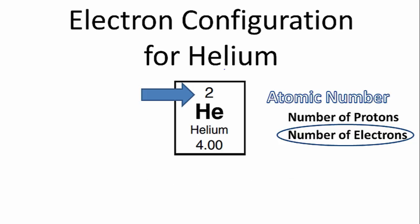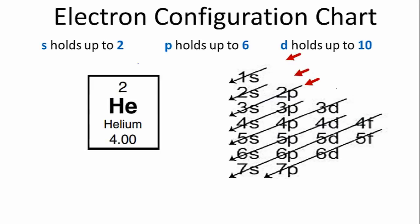And we can use that number to find the electron configuration for helium. We'll use the chart on the right to find the configuration for helium, which has two electrons. So we'll start by going down the first row, which has 1s as the orbital there.